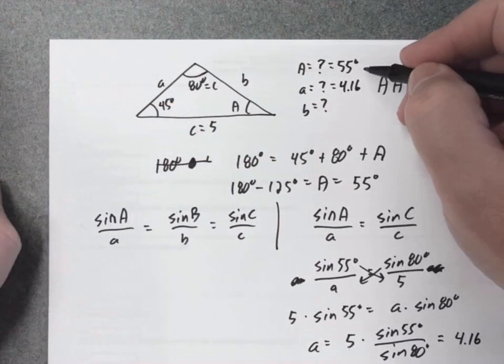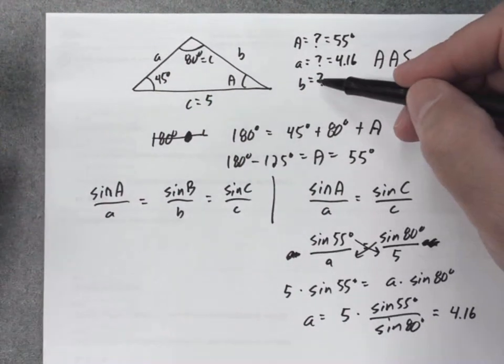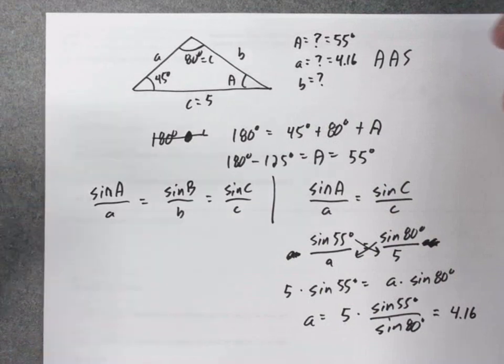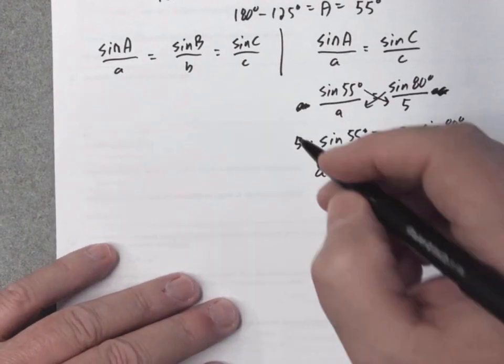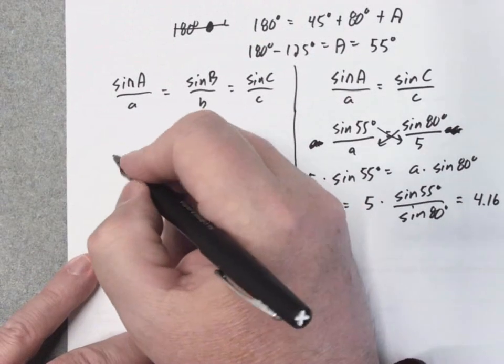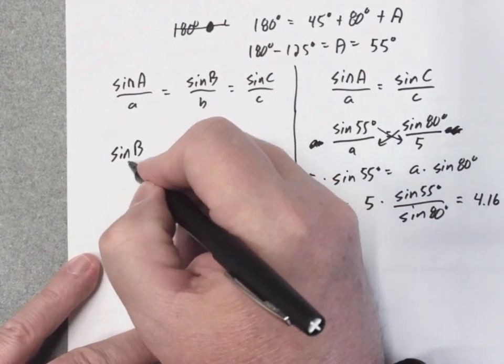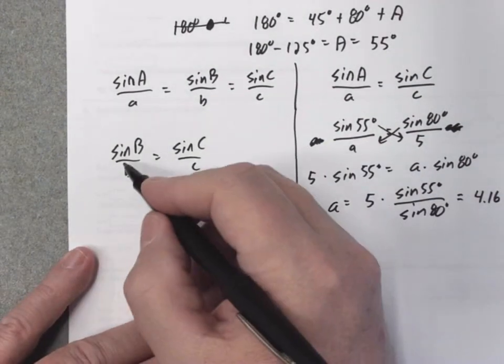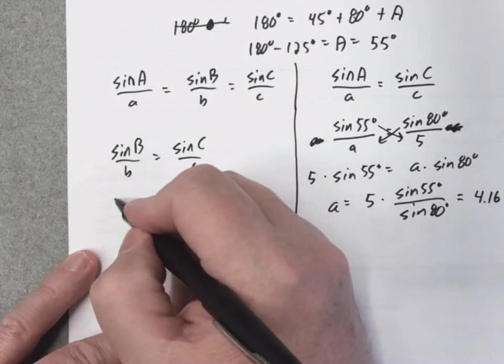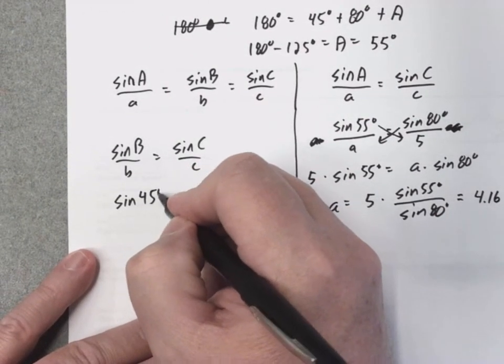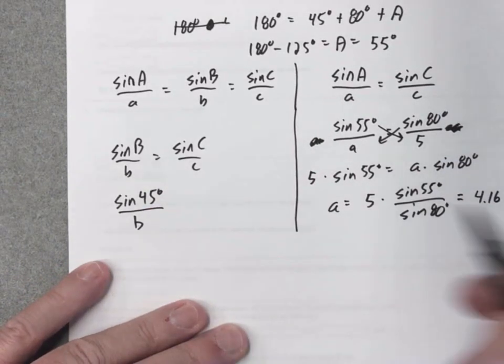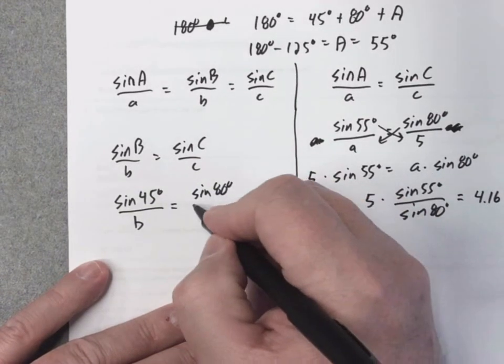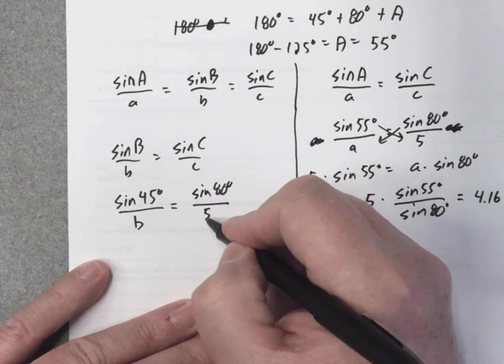Now, for B, I use the law of sines again and to find B, I can group it with A or C. It doesn't matter. Maybe I'll just do C again. So, sine B over B equals sine C over C. Sine of B, I know B is 45 degrees. So, the sine of 45 degrees over B, I don't know side B, equals sine, I know C is 80 degrees. I know side C is 5.